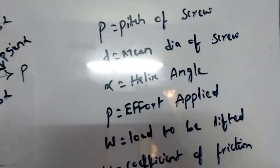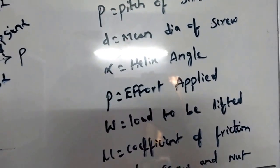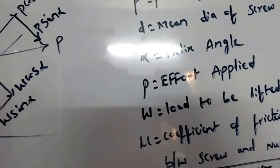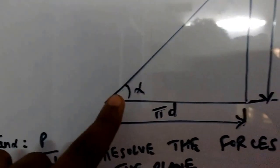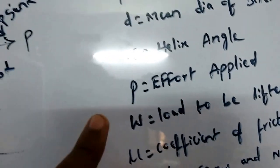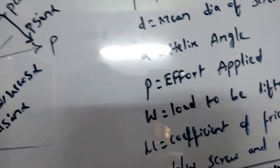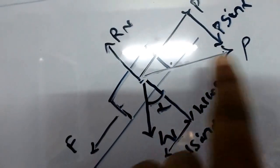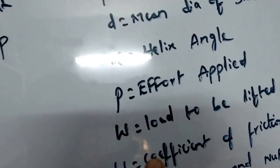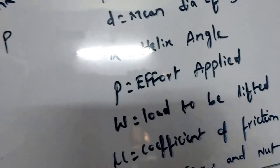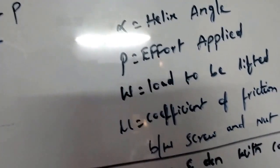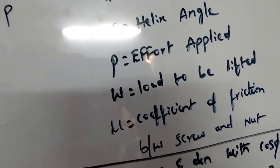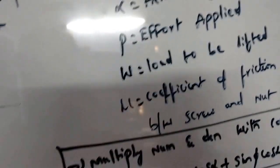Let p be the pitch of the screw, small d equals the mean diameter of the screw, alpha equals the helix angle, and P equals the effort applied at the handle. W equals the load to be lifted, and mu equals the coefficient of friction between the screw and the nut.